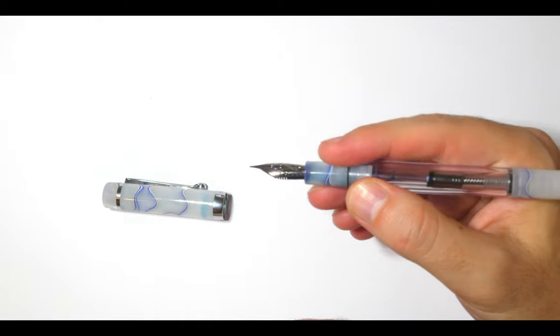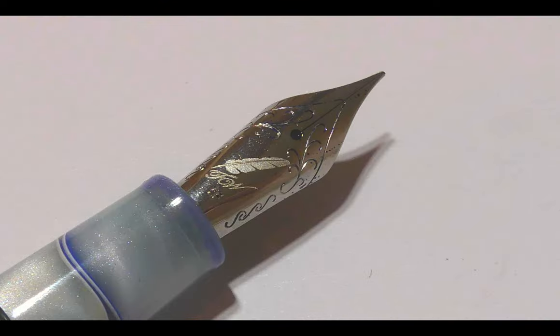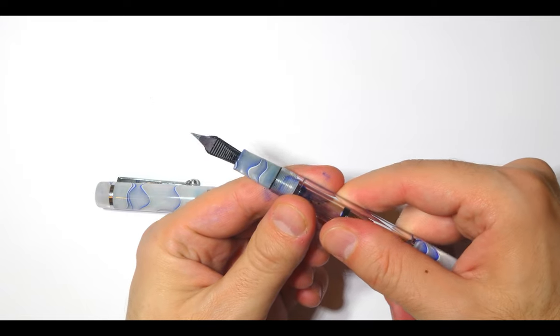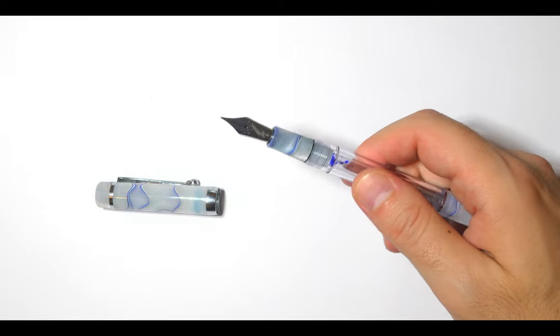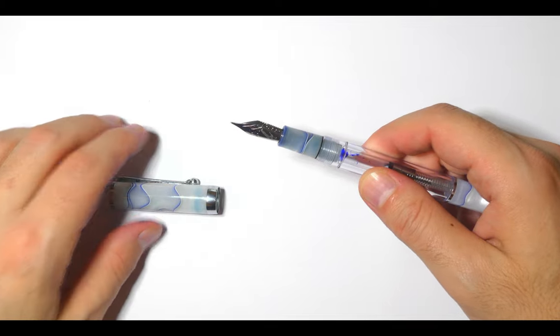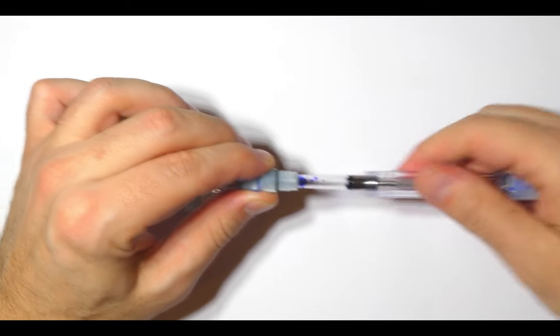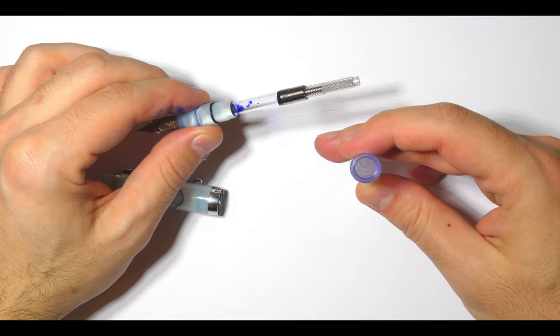The section tapers slightly and then we have the number 6 steel Jowo nib with the logo of the company on it and the EF for extra fine. Underneath the nib we have the classic Jowo ABS feed. Almost like all Jowo nibs this one is also unscrewable and easily replaceable with other Jowo nibs. Unscrewing the section and we have the standard international converter. But consider that this pen is made to be used as eyedropper.